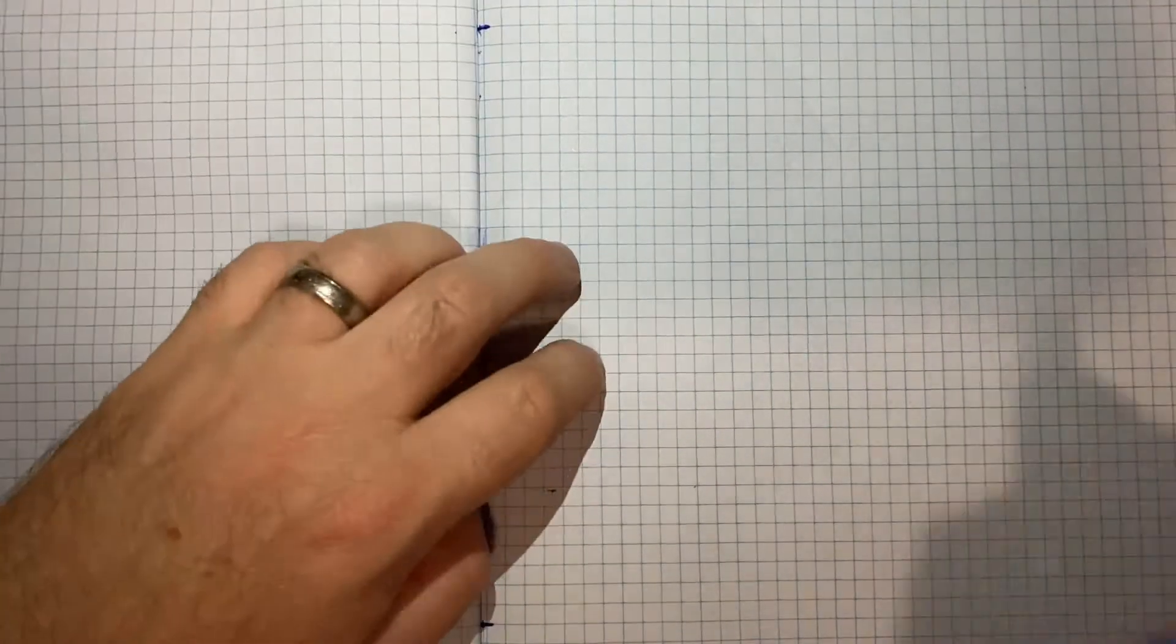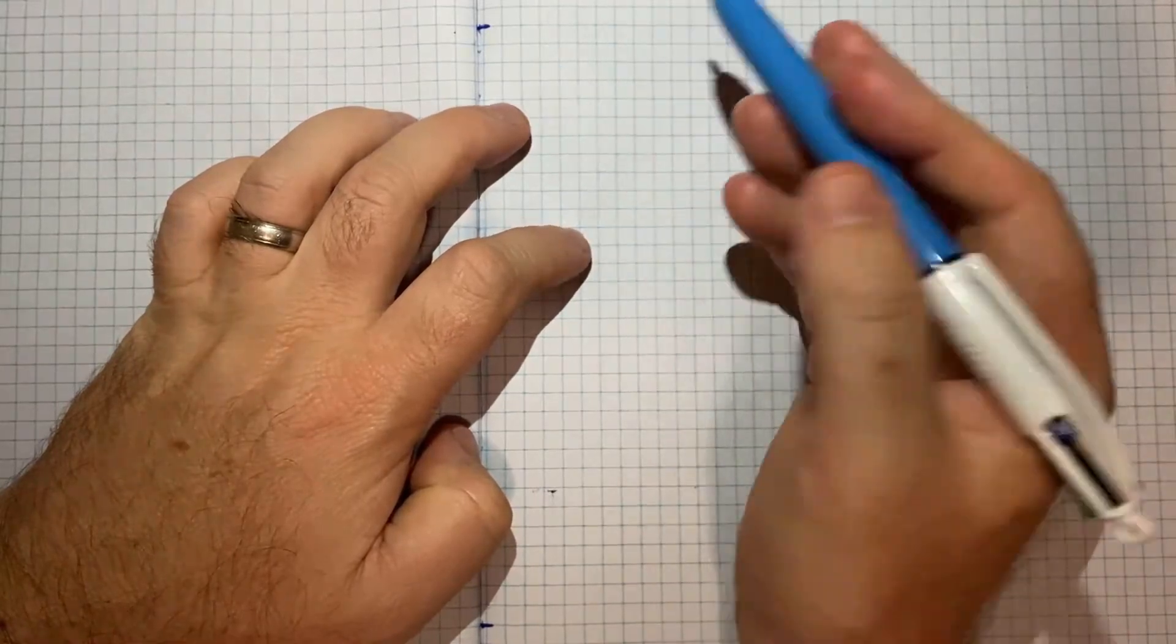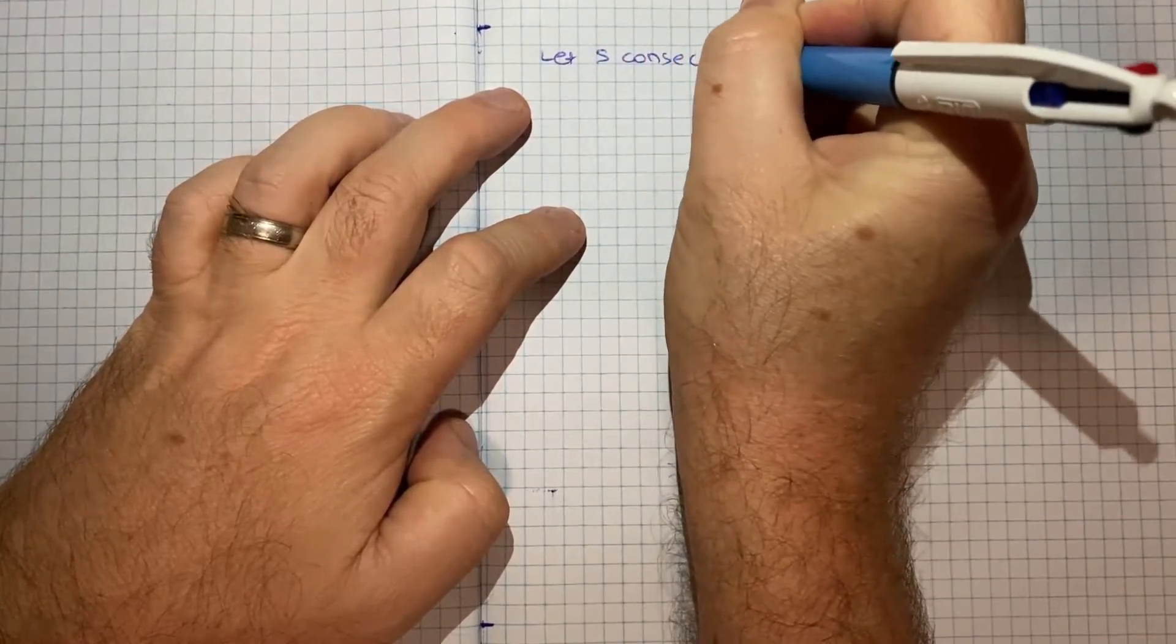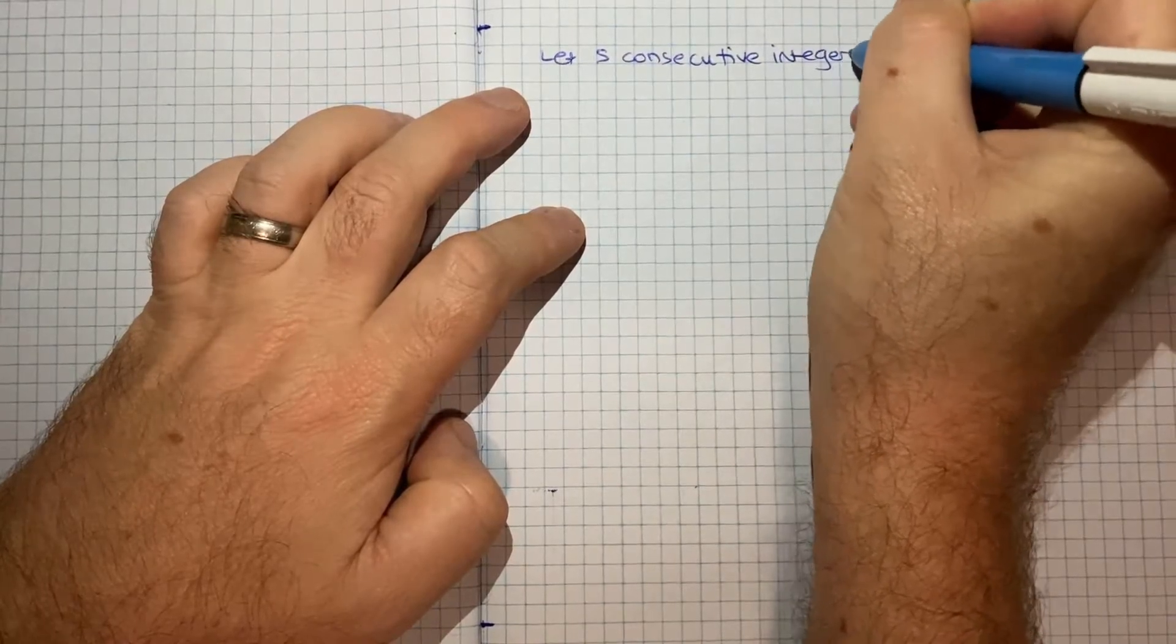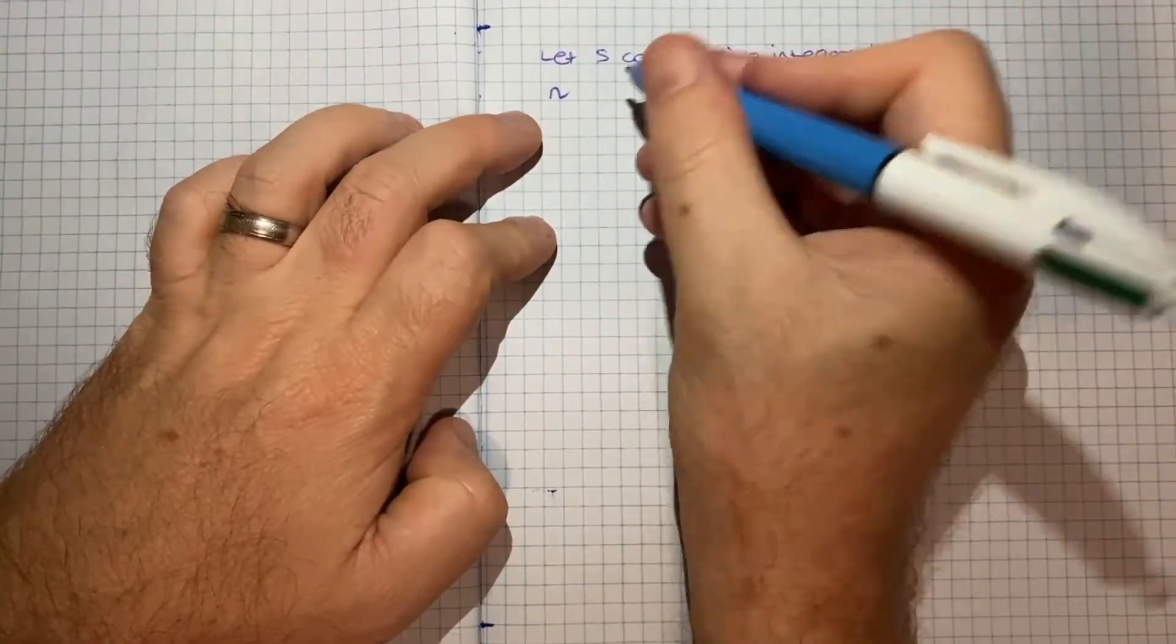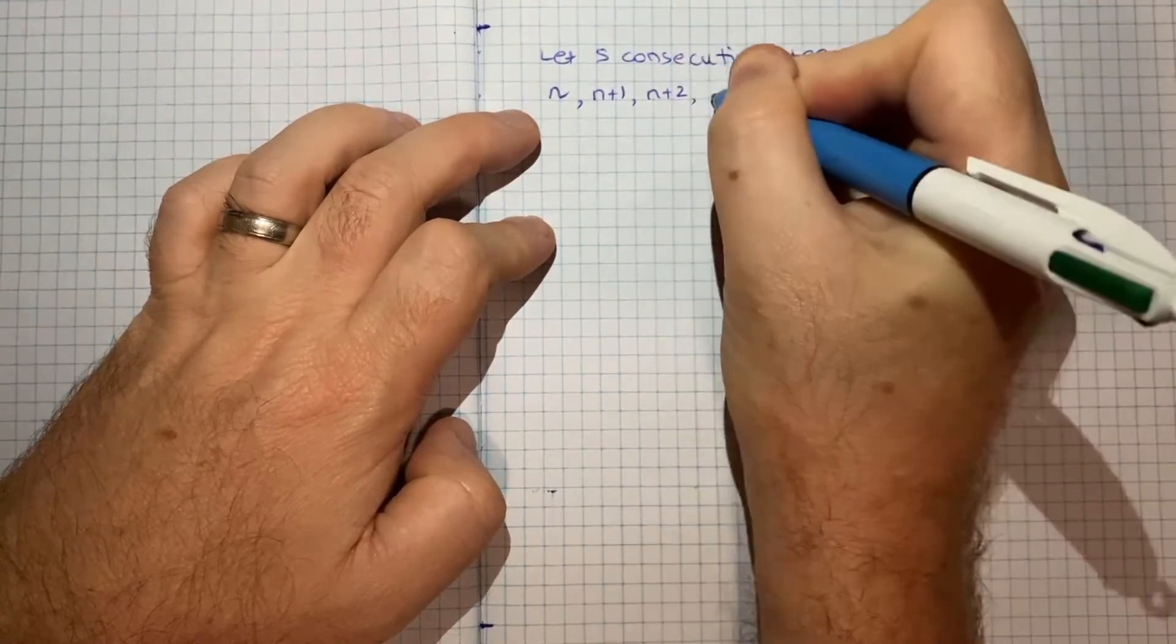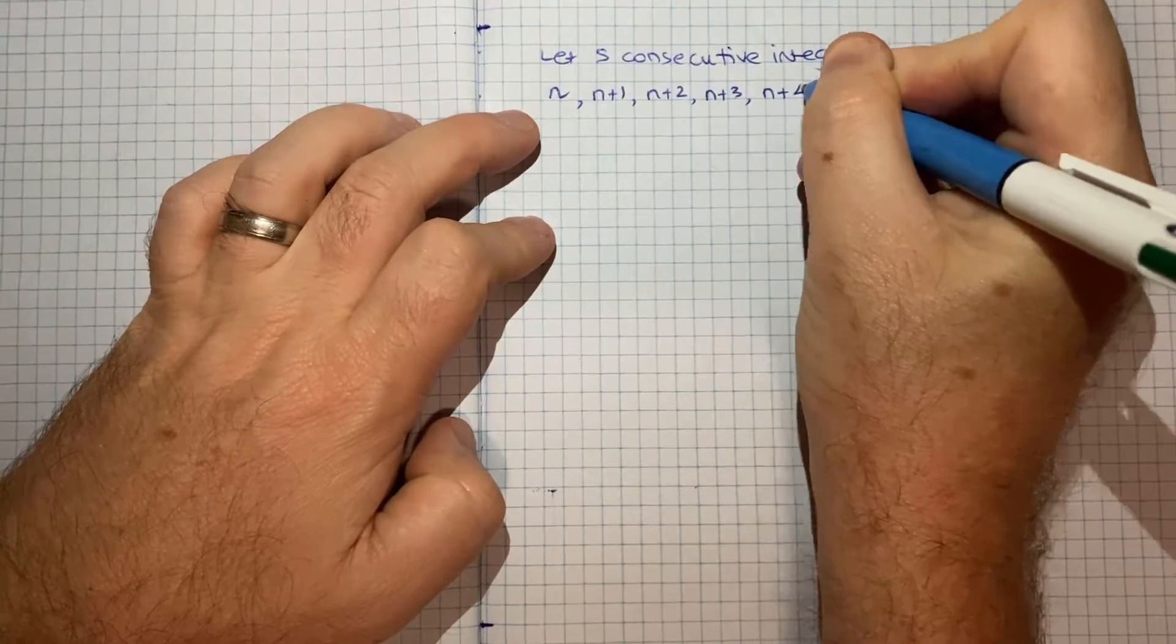To tackle this question we should define what those five integers will be. Let's let the five consecutive integers be n, where n will be an integer. That means the next integer would be n plus one, then the next one would be n plus two, the next one would be n plus three, and then we'd get n plus four.